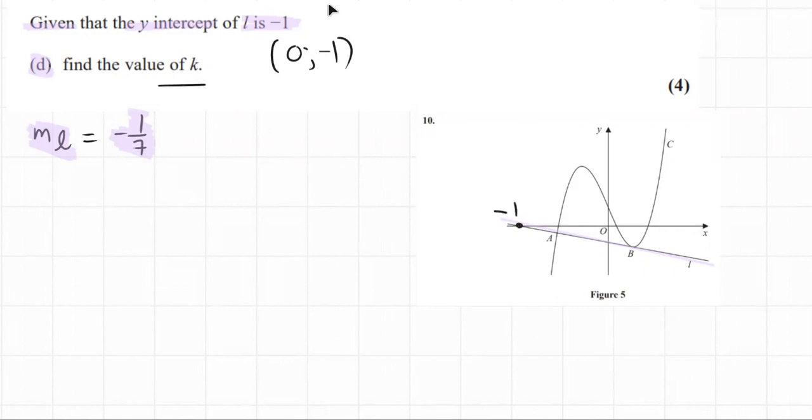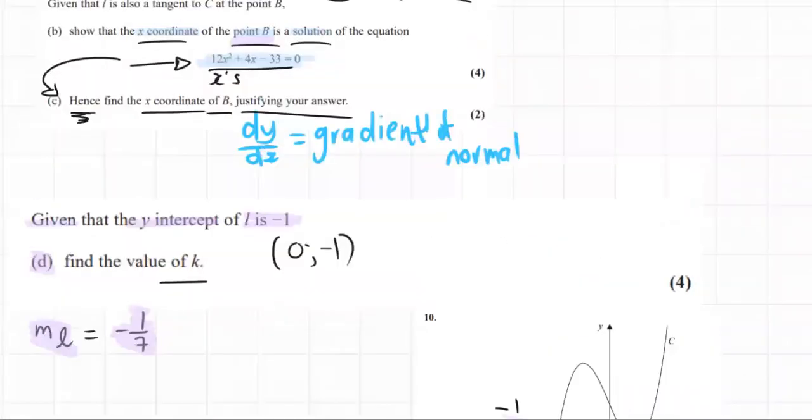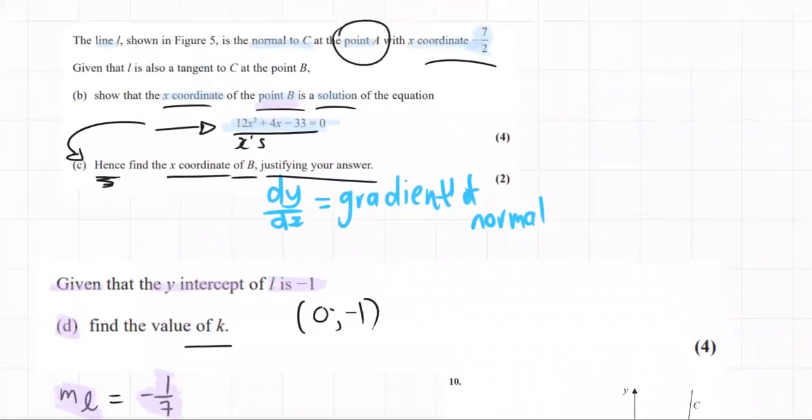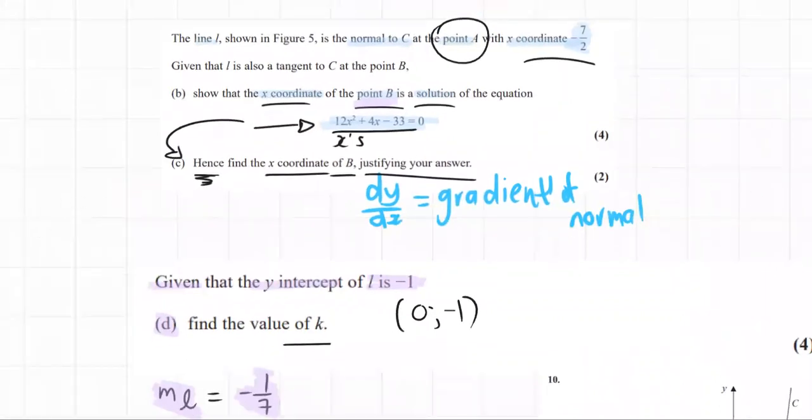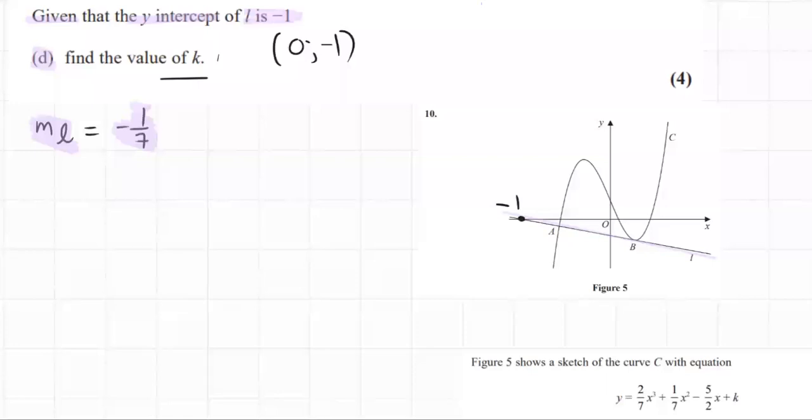And it asks us to find the value of k. k comes from a previous question as well. So it's even further back than that. This was given in the beginning of the question, figure 5, showing the curve, and here's the equation of the curve that was given.